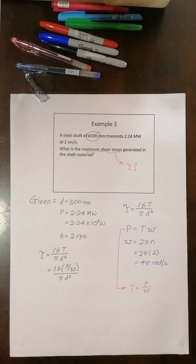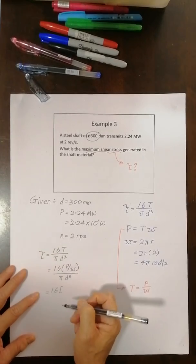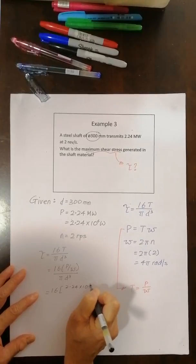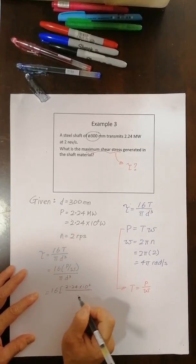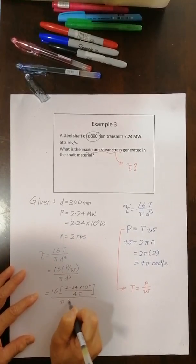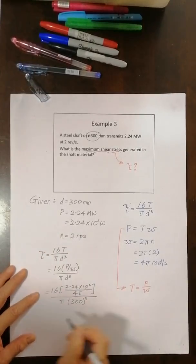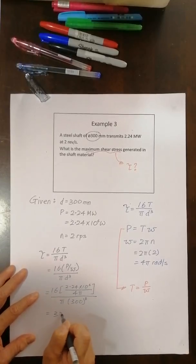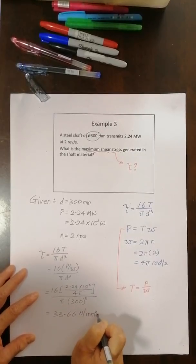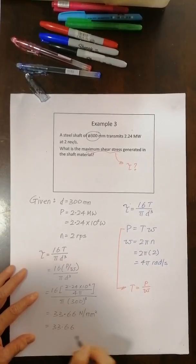And what I want to find is shear stress. So I just substitute the value in 16. Power is 2.24 times 10 to the power 6. Omega is 4 pi. Pi times 300 cubed. And from here I calculate I got Newton per millimeter squared which is equivalent to 33.66 same value. Mega.